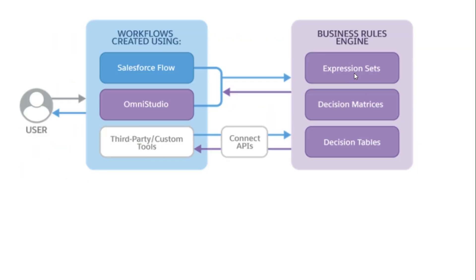This first diagram shows the architecture: users, Salesforce Flow, OmniStudio, and third-party custom tools can call expression sets and get data back. Expression sets in turn get data from decision matrices and decision tables. And not only Salesforce — you can connect another tool or software via the Connect API to use only the business engine of Salesforce.